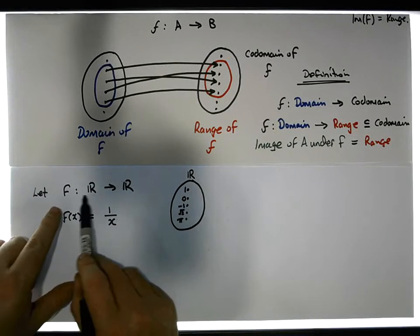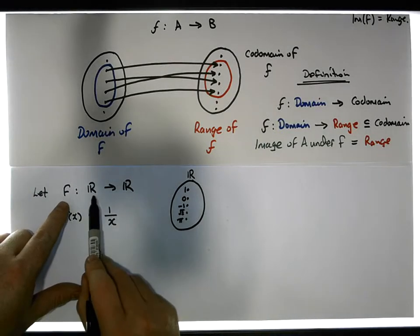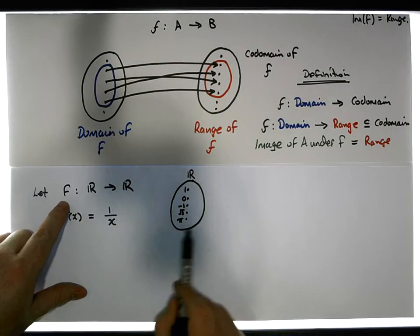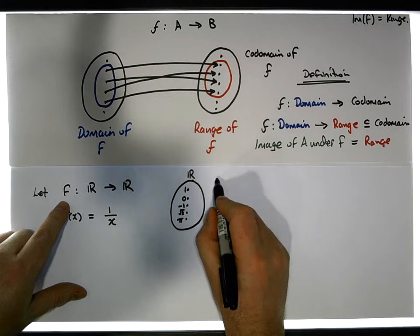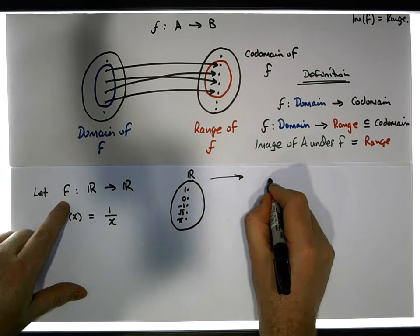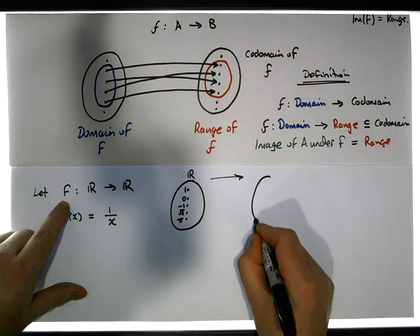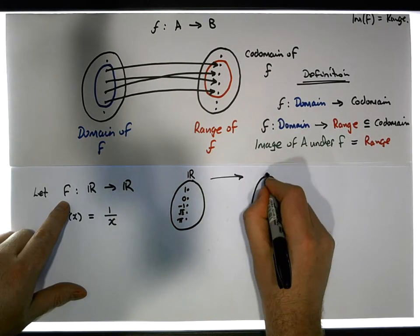I've said that the function can take any real number, so it should be able to take any one of these. And what it does is it maps them across into real numbers.